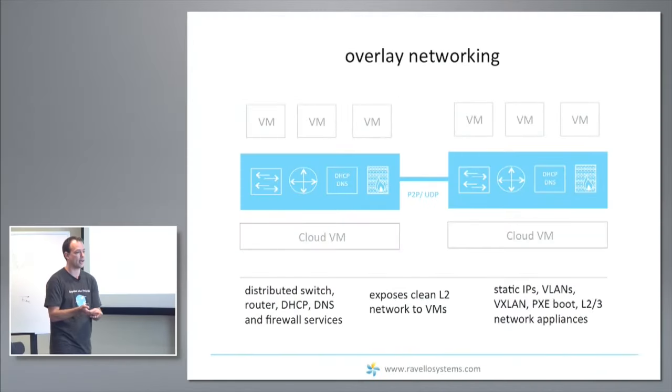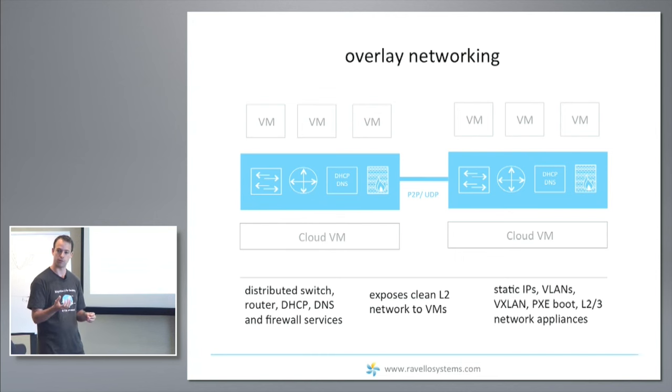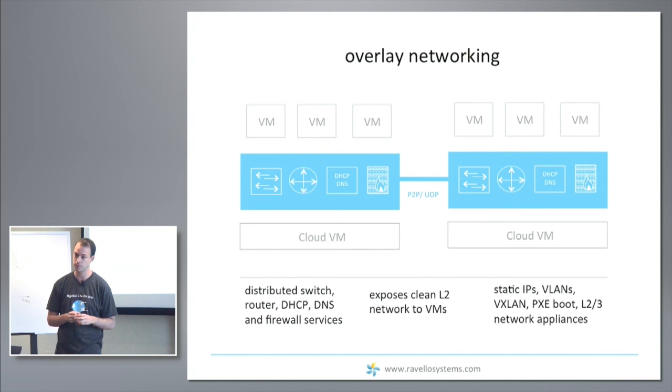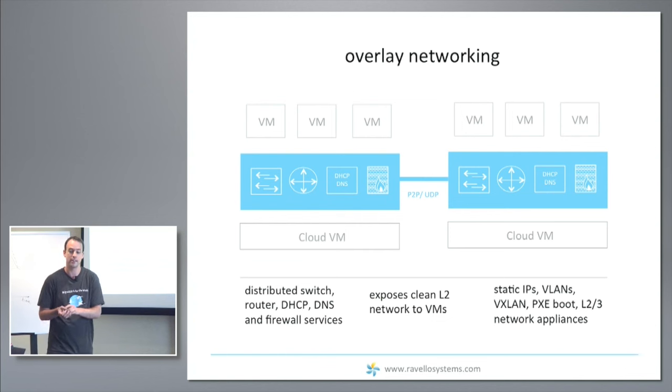You do not get full control over the number of NICs you have. In some instances you have some flexibility — for example, inside an Amazon VPC you can add multiple NICs, but in some clouds you cannot. You're also often limited in what protocols you can use. We solve this fundamental networking problem by building an overlay network, exposing a clean Layer 2 network with a distributed switch we've developed, tunneling traffic between different hosts using only UDP connectivity as a requirement.